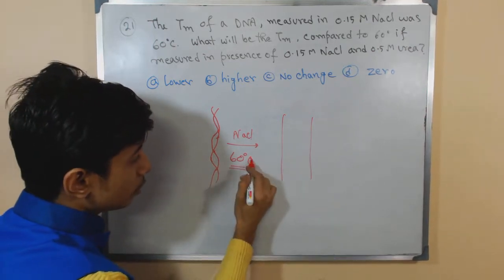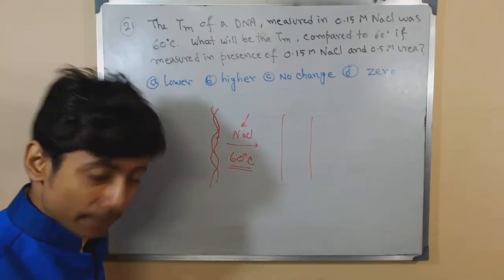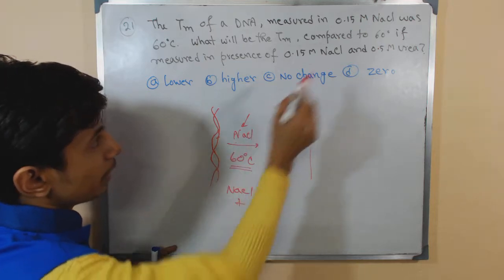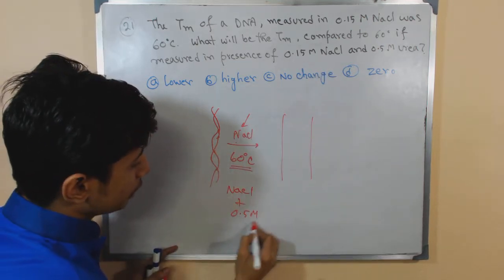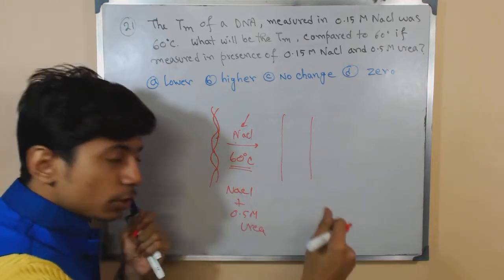60 degree Celsius is required to separate them apart along with the denaturing agent NaCl. Now if we put NaCl along with 0.5 molar urea, we are helping to separate those strands.